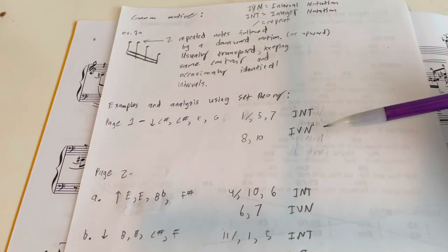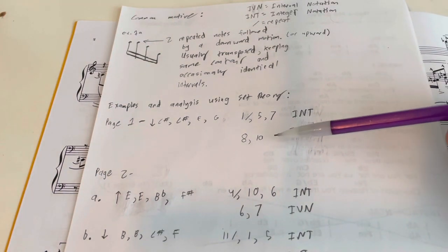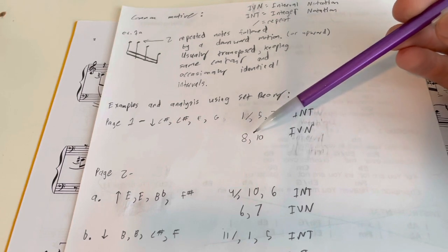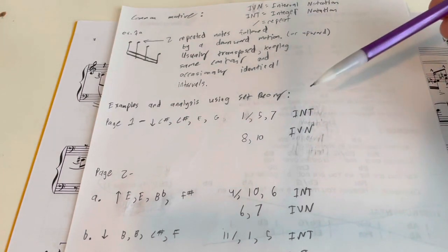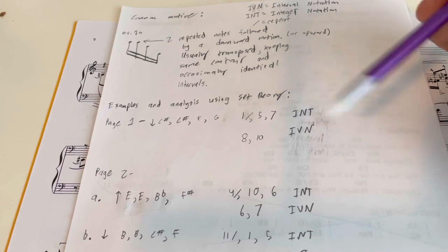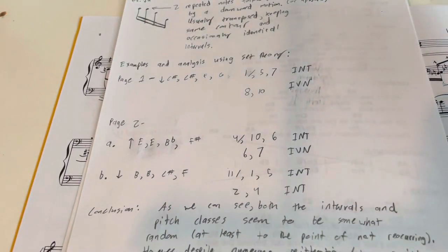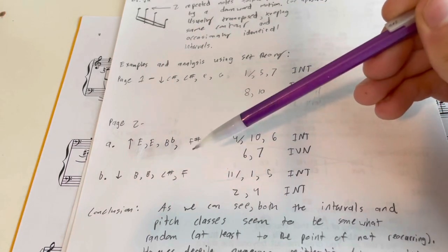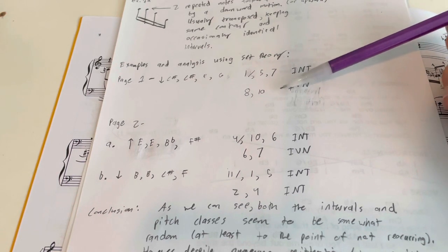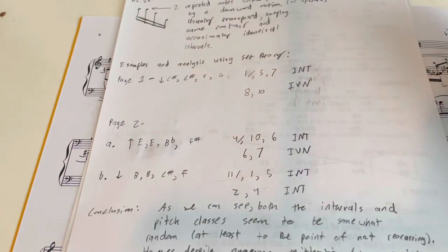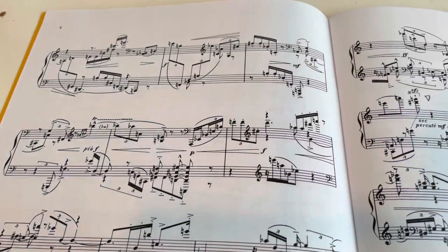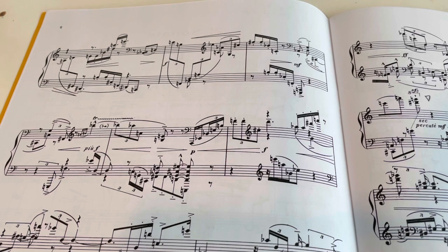In interval notation, it counts the distance between different parts using the interval as a number. This gives us a quick way of seeing what kinds of intervals are present. Looking at the example from page one and the first two from page two, the interval classes are 8, 10, 6, 7, 2, 4 — so it's never the same. We see an almost random instance of this, at least to the point where the intervals are not reoccurring.